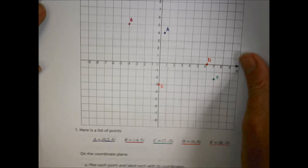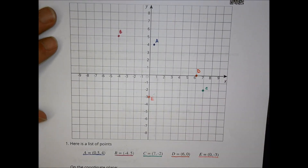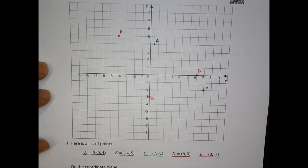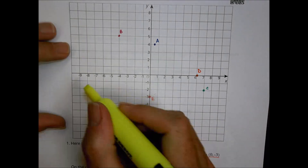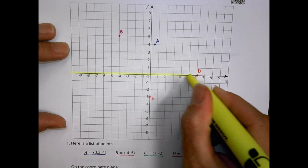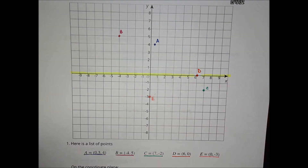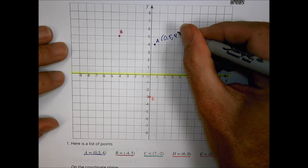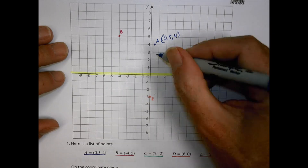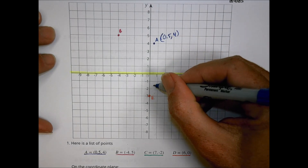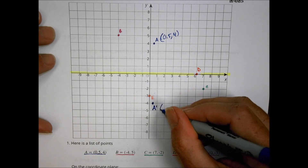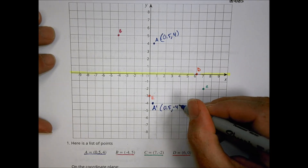Next, you looked at how to reflect points across the coordinate plane. I placed points A, B, C, D, E, and F, and the task was to reflect them using the x-axis as the line of reflection. If A starts at 0.5, 4, we move to the same x-value of 0.5 but drop down to negative 4. That becomes A prime at 0.5, negative 4.